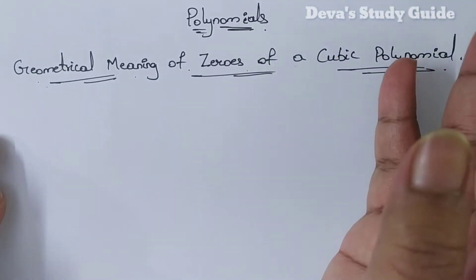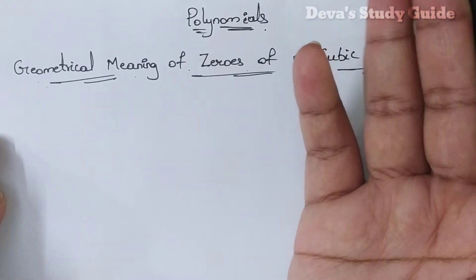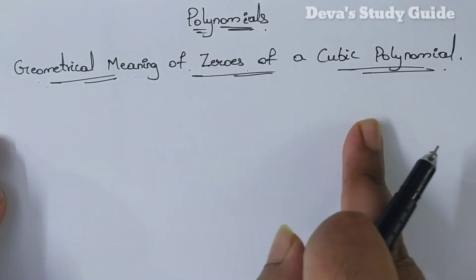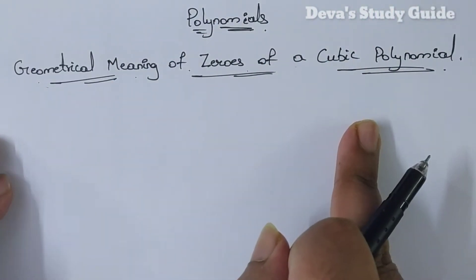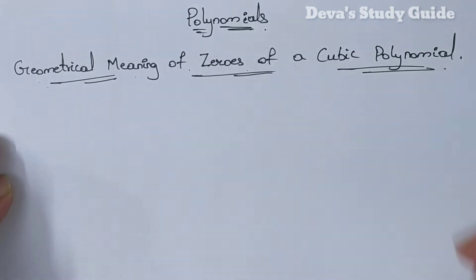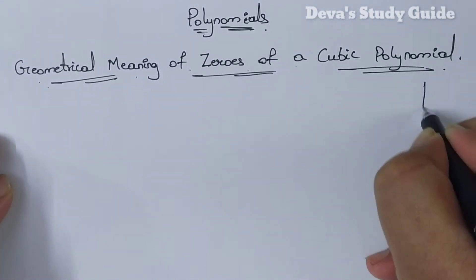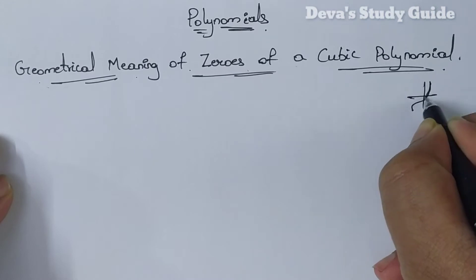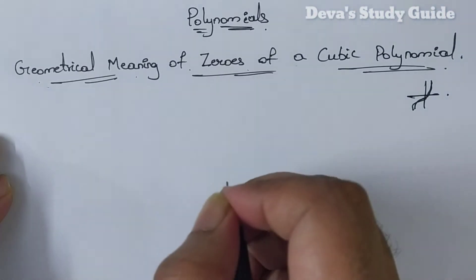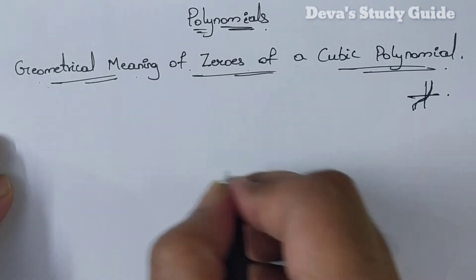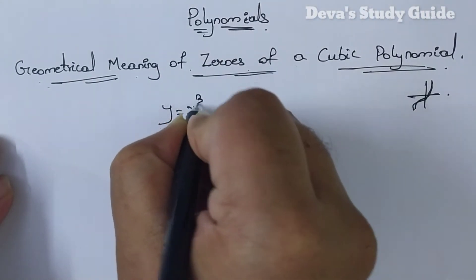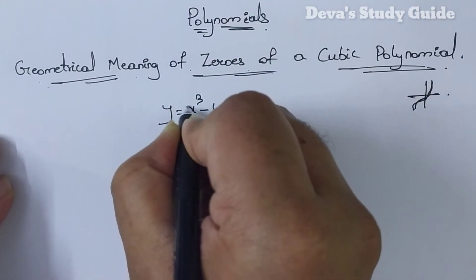We have a graph. We have a straight line and a cubic curve. If you are trying to find the zeros and the curve, y is equal to x cube minus 4x.